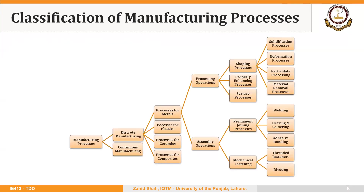We can classify the manufacturing processes in different categories, as we saw repeatedly in our manufacturing process course. For simplicity, I will be focusing more on these four types: solidification processes, deformation processes, particulate processing, and material removal processes. And briefly we will see welding in the end. But my focus will not be on the process itself, but the tooling that each of these processes uses.